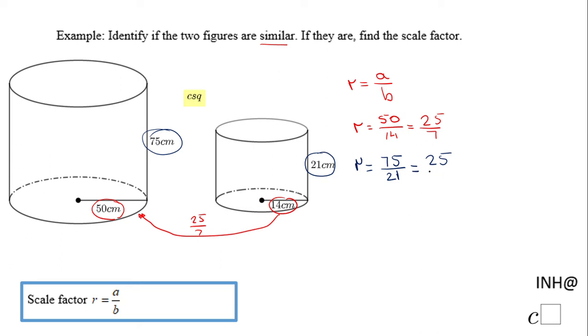So we notice these two are the same, so that means these two figures are similar. Because if I multiply 21 by this scale factor, 25 over 7, I get 75, and the same for 14.